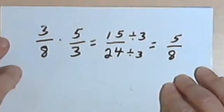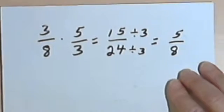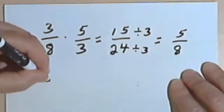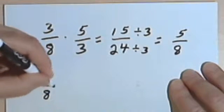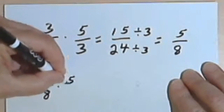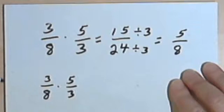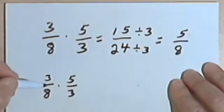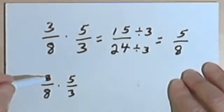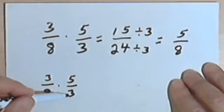Now, there's a much faster way to get to this answer. Let's look at the problem again. I've got 3 over 8 times 5 over 3. And looking at this, I realize I've got a 3 in the numerator and a 3 in the denominator.